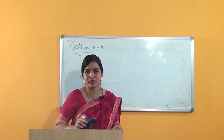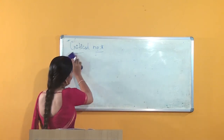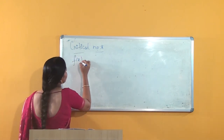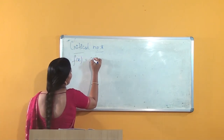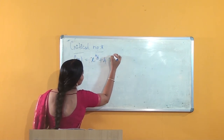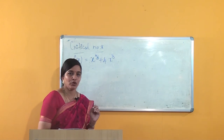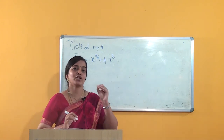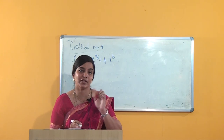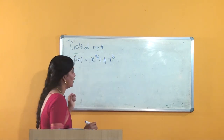I will go with a few examples. Find the critical number of f(x) = x^(4/3) + 4·x^(1/3). Since f'(c) = 0 or f'(c) does not exist, we clearly have to find the derivative of this function.